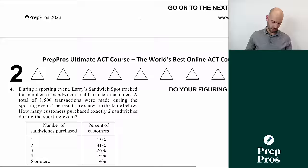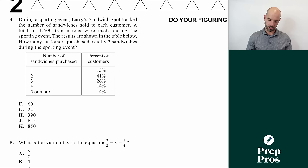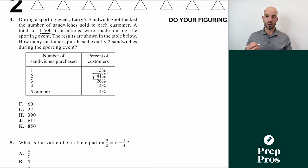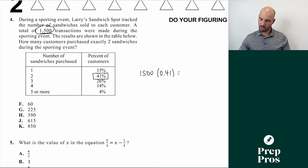Number four: during a sporting event, Larry's Sandwich Spot tracked 1,500 transactions. The results show 41% of customers purchased two sandwiches. So we do 1,500 times 0.41. Use your calculator — you're allowed to use a graphing or scientific calculator. We get a value of 615. The answer is J.